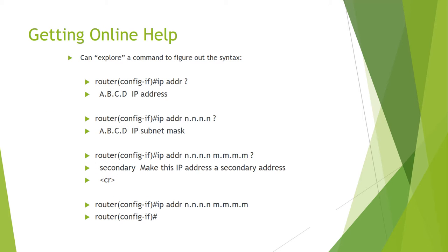Getting online help: you can explore a command to figure out the syntax. Router(config-if)# ip address ? shows A.B.C.D (IP address). Router(config-if)# ip address <network-address> ? shows A.B.C.D (IP subnet mask).